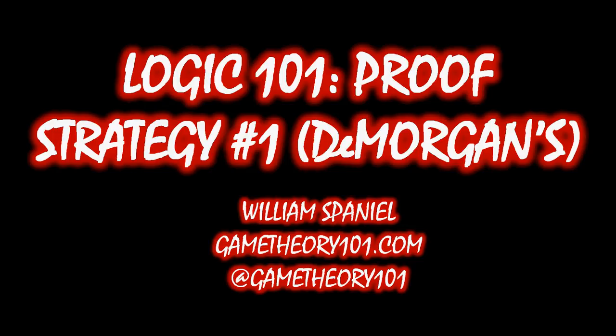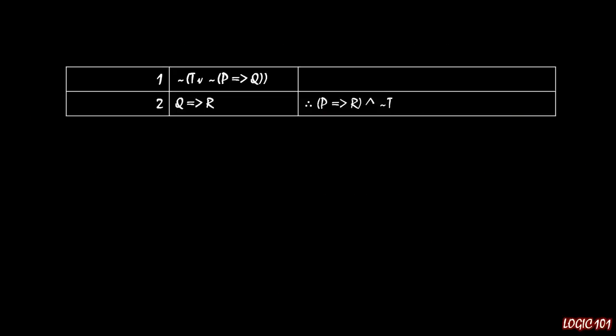To see why this is useful, let's look at the following problem. We have two premises here: first one NOT T or NOT P implies Q, and Q implies R. And what we're trying to do here is show that P implies R AND NOT T.